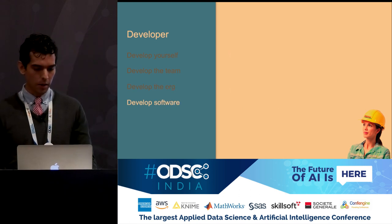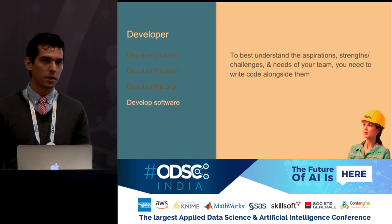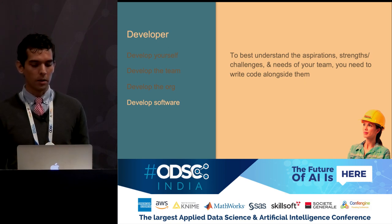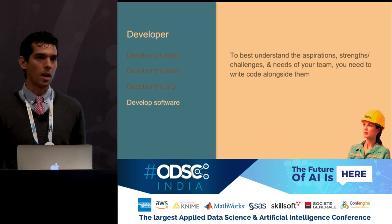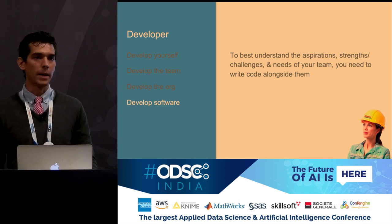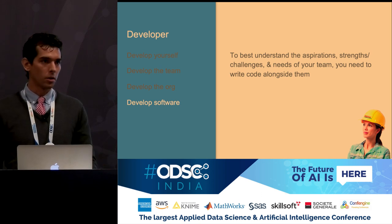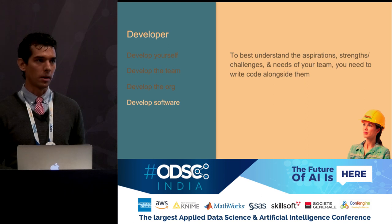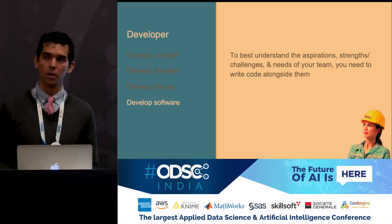Finally, a data science leader is also developing software — you should probably be spending some of your time writing code. This doesn't have to be 50% of your time; maybe 10 to 30%, depending on the size and maturity of your team. To really understand your team and their work, it's very difficult to do that if you're not in the trenches with them some amount of time. You may not have the bandwidth to own a large model or a large-scale analysis effort, but it's still important to understand the stack and tools from their perspective. Although your primary competitive advantage may not be as an individual contributor, a really effective data science leader is still able to do that some of their time, and it ultimately makes them more successful in the other areas.